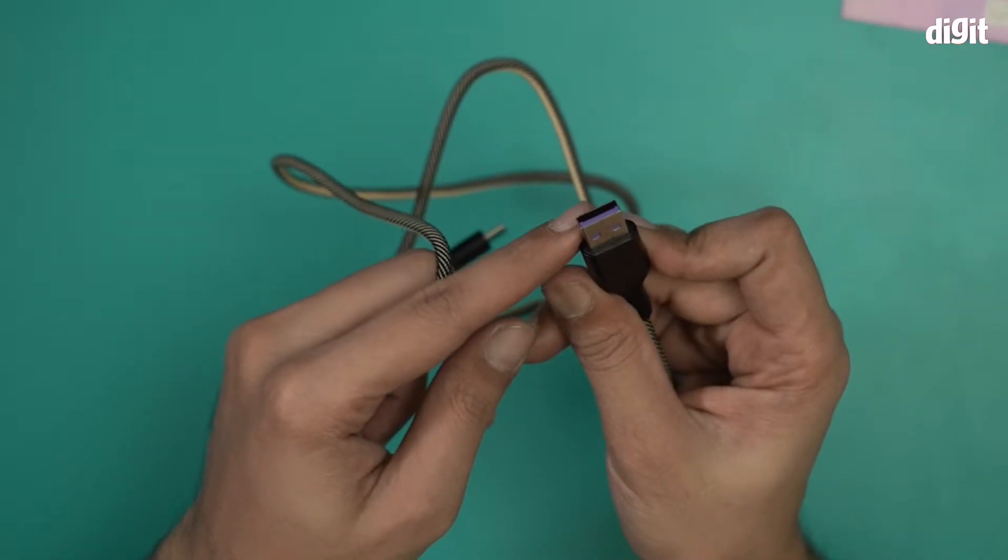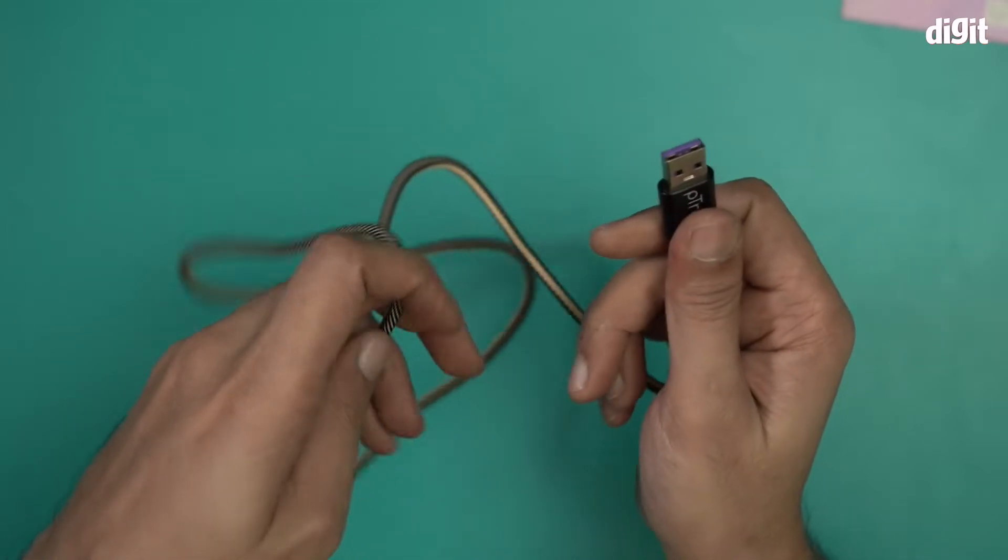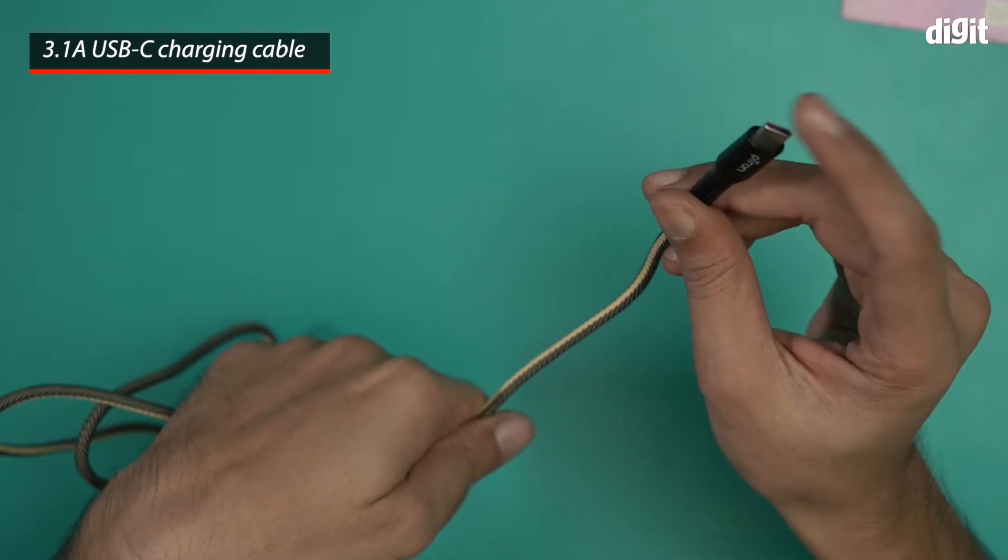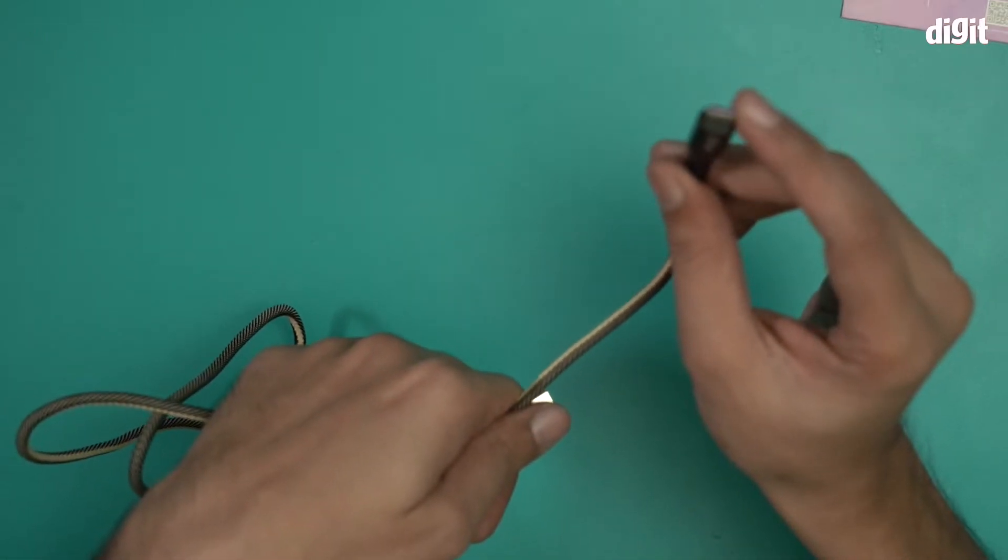This is the USB-A port that will go inside a power brick or a laptop. And this is the Type-C where you will connect whatever device you want to charge or connect.